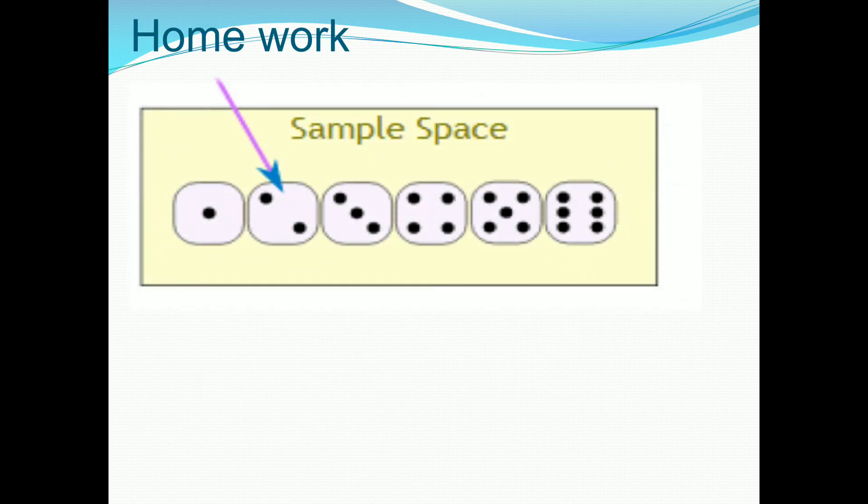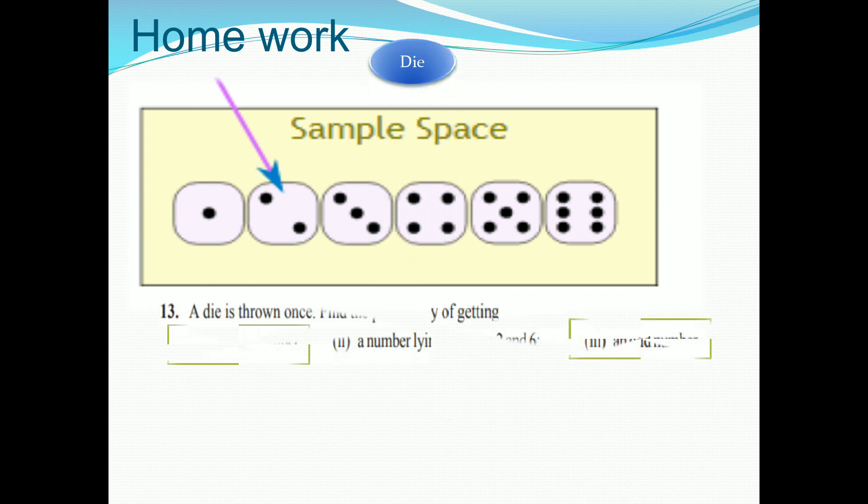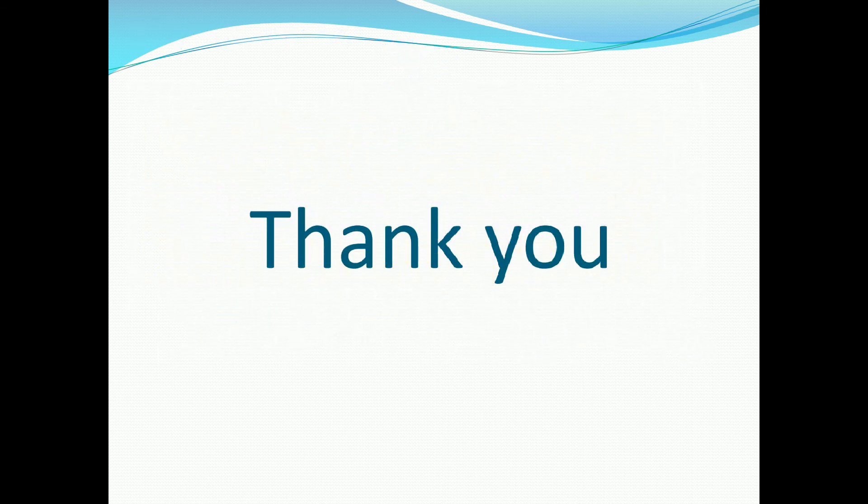Homework. Same dice. Question is that a dice is thrown once. Find the probability of getting a number lying between 2 and 6. So please try yourself students, try this question. Thank you students.